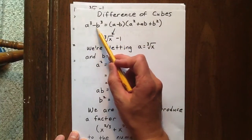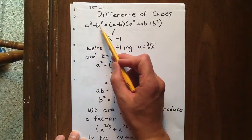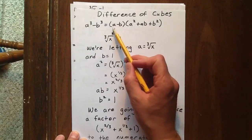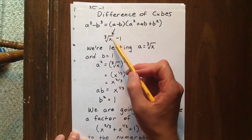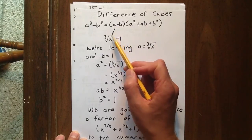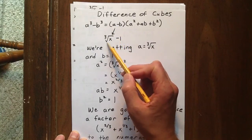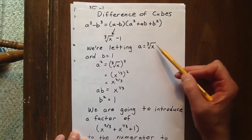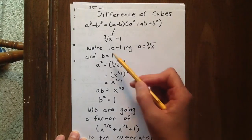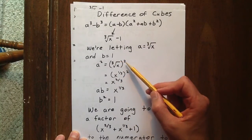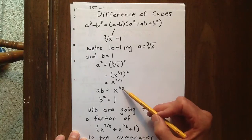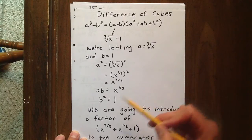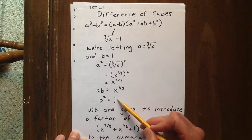If a cubed minus b cubed is our expression, we can factor that to a minus b times a squared plus ab plus b squared. We're going to think of a minus b as the cubed root of x minus 1, letting a be the cubed root of x and b equal 1. That means a squared is the cubed root of x squared, which is x to the two-thirds, ab is x to the one-third, and b squared is 1.